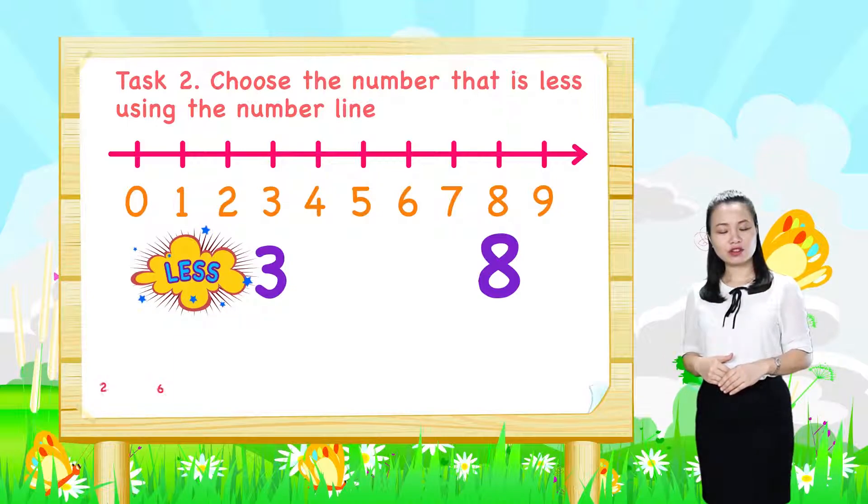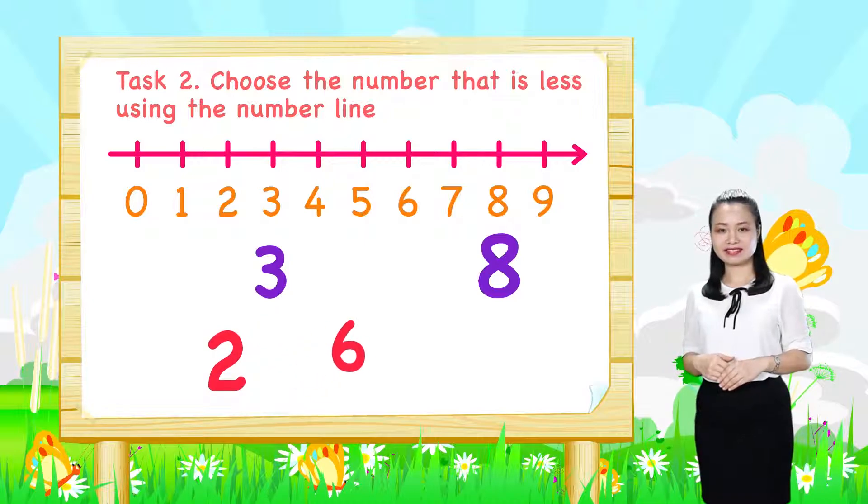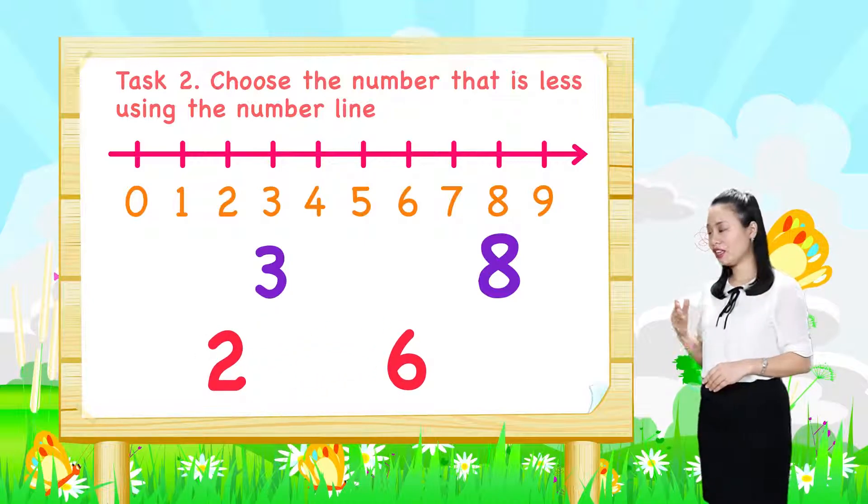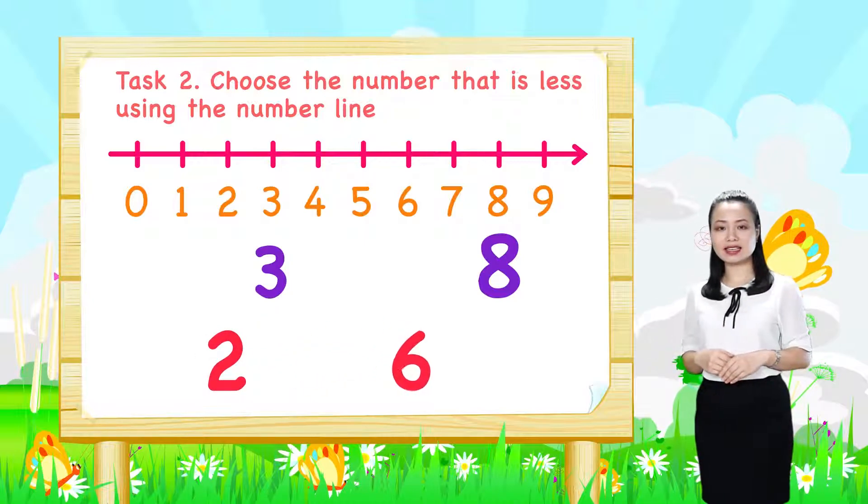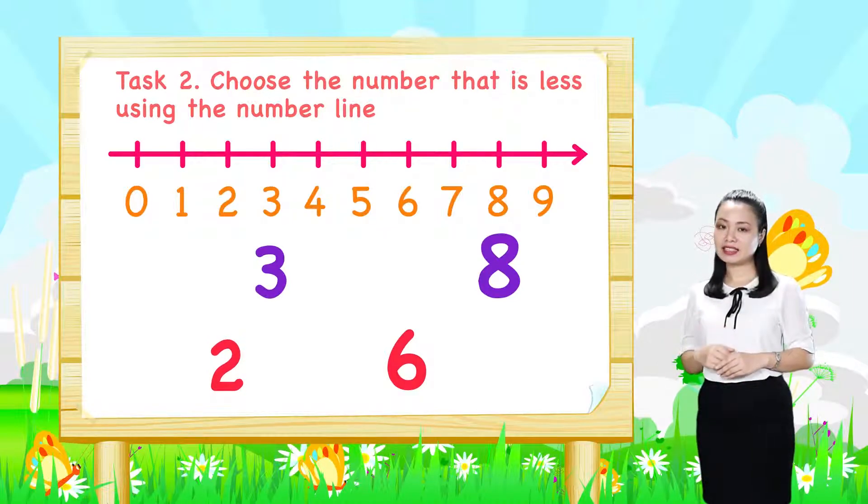Next, for the pair 2 and 6, number 2 is to the left of number 6. Therefore, 2 is less.